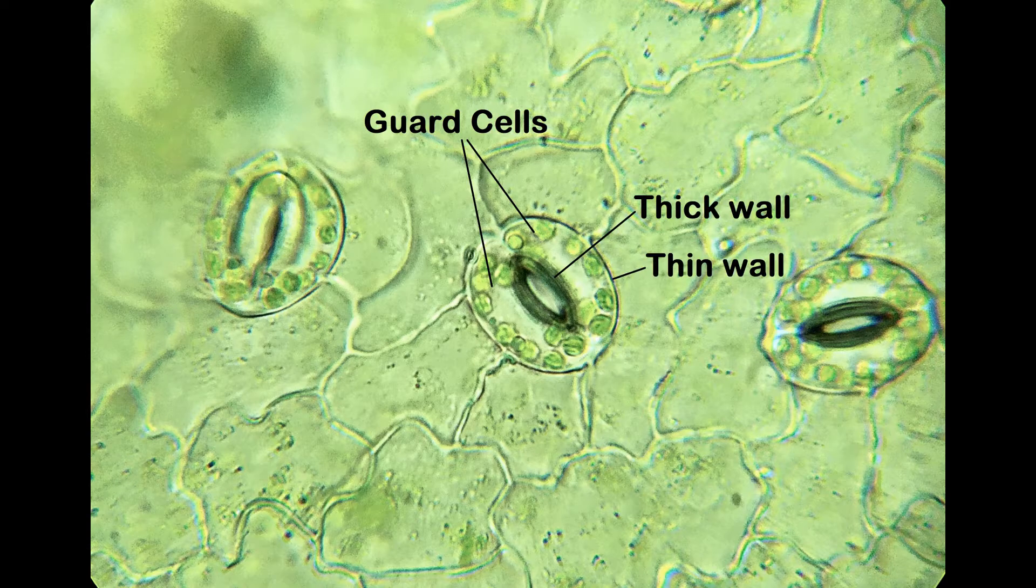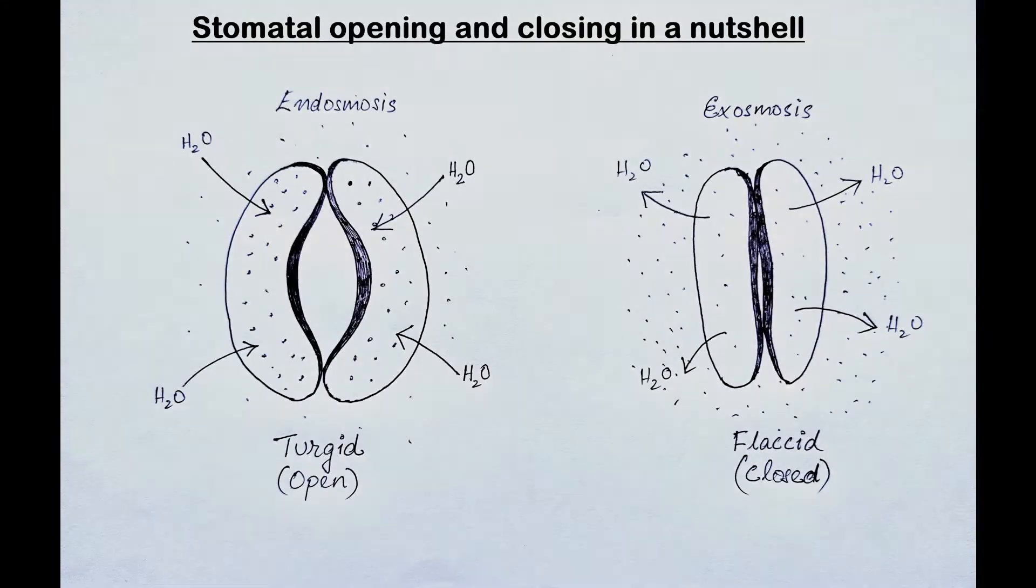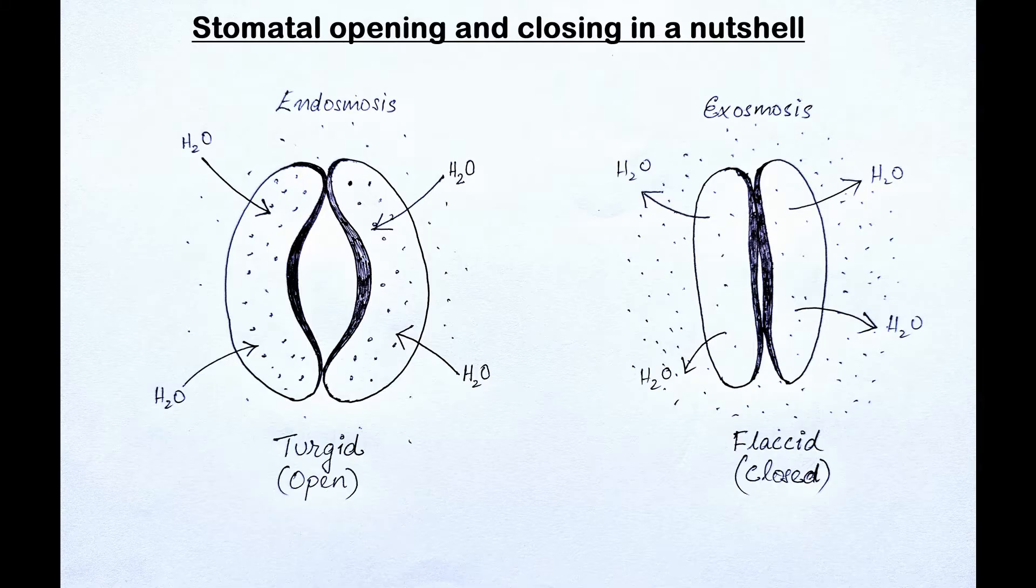The wall of a guard cell is thicker towards the stomatal pore, while the wall away from the pore is thin and elastic. Stomatal opening and closing is governed by a chain of physiological events that occur within the guard cells, leading to the increase or decrease of osmotic concentration of sugars and other solutes within the guard cells.